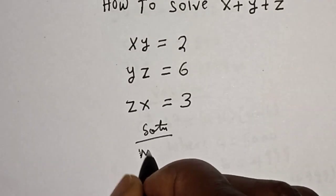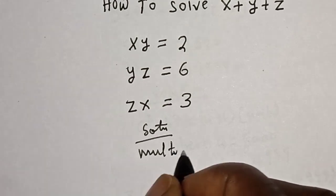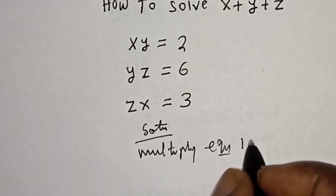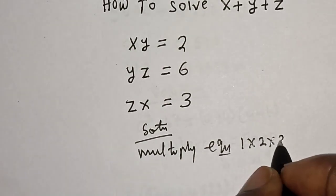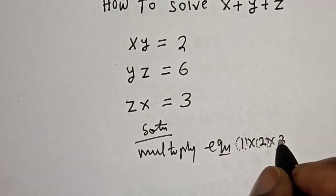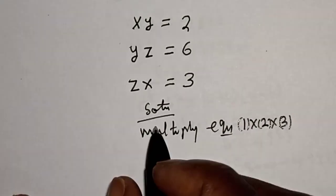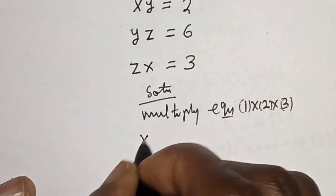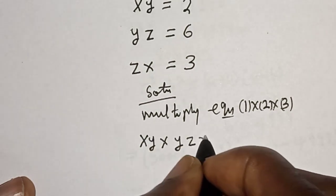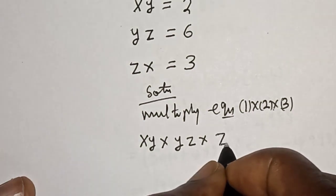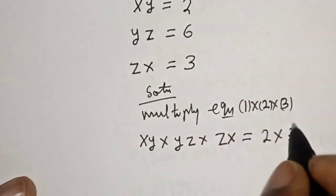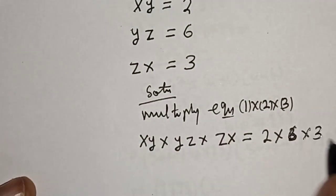Let's multiply equation 1 by equation 2 by equation 3. That is, X·Y multiplied by Y·Z multiplied by Z·X is equal to 2 times 6 times 3.